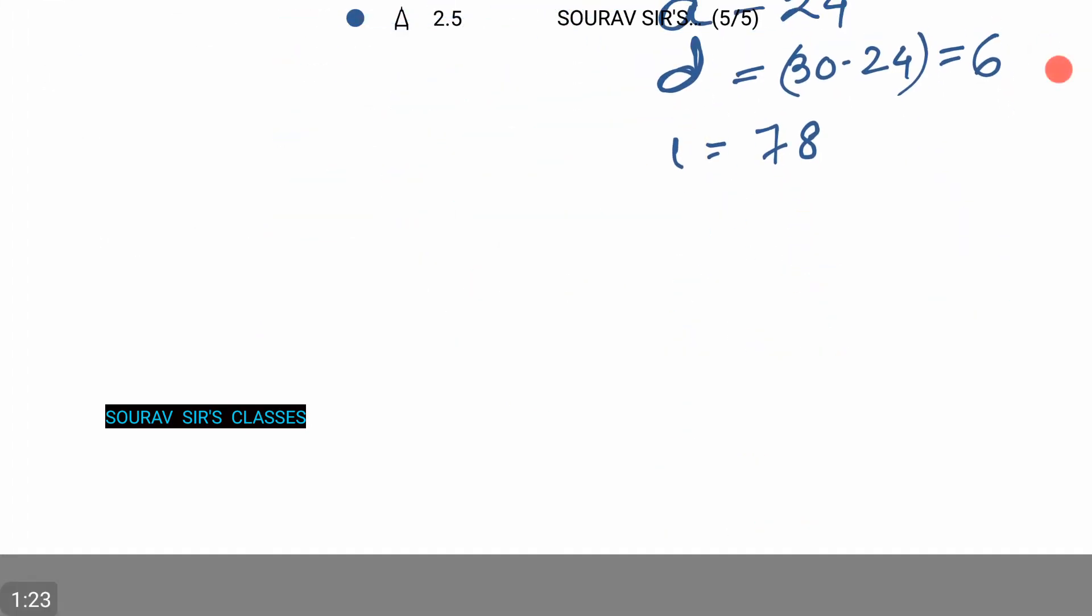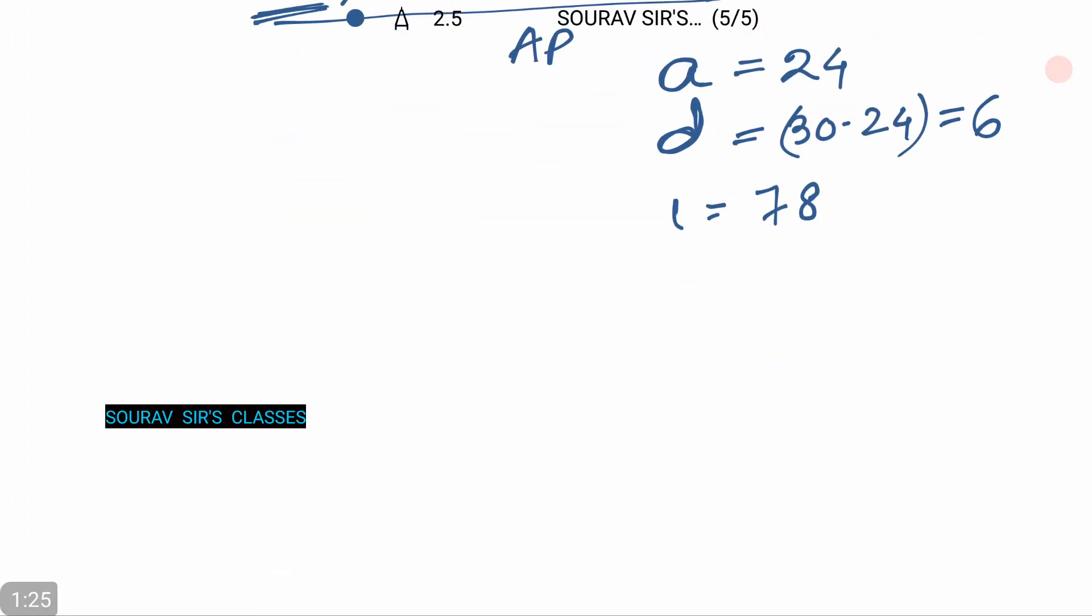Now let us assume that the total number of terms between 19 and 80, I repeat, the total number of terms between 19 and 80 that is divisible by 6 is N. Let us assume that N is the number of terms that is divisible by 6 between 19 and 80.